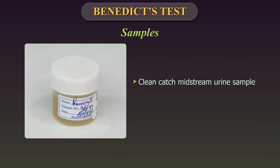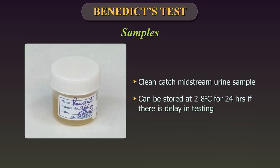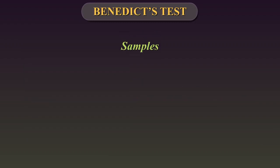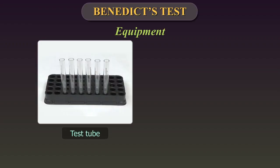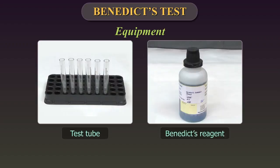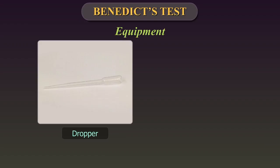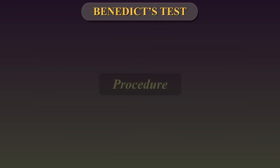Samples: Freshly voided urine, preferably a clean catch midstream morning specimen. Samples should be stored at 2 to 8 degrees centigrade for up to 24 hours. Grossly contaminated or unlabelled specimens should be rejected. Equipment required: test tube, Benedict's reagent, dropper, and a spirit lamp or Bunsen burner.